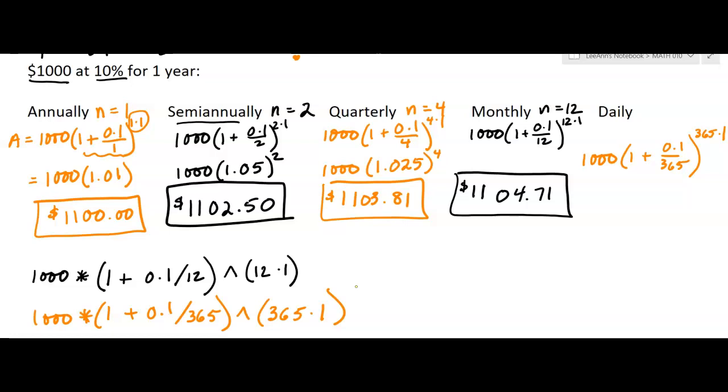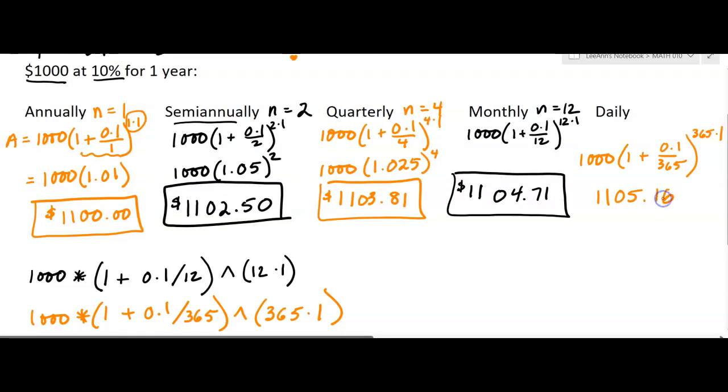We get probably what we expected: $1,105, and it looks like this is going to round up to 16 cents. So straight rounding rules on this. If it's five or more, it's going to round up, and that one is.